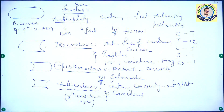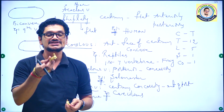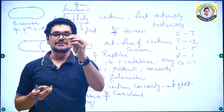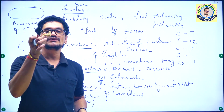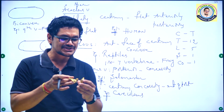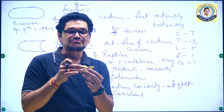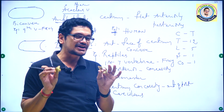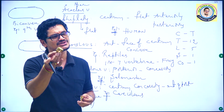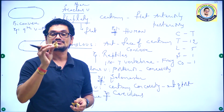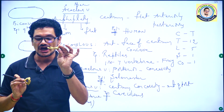Without mentioning the first and second vertebrae I cannot close the vertebral session. The first vertebra is called atlas and the second vertebra is called axis — very important components. These are very important structures in the entire human skeletal system, especially regarding the vertebral column.